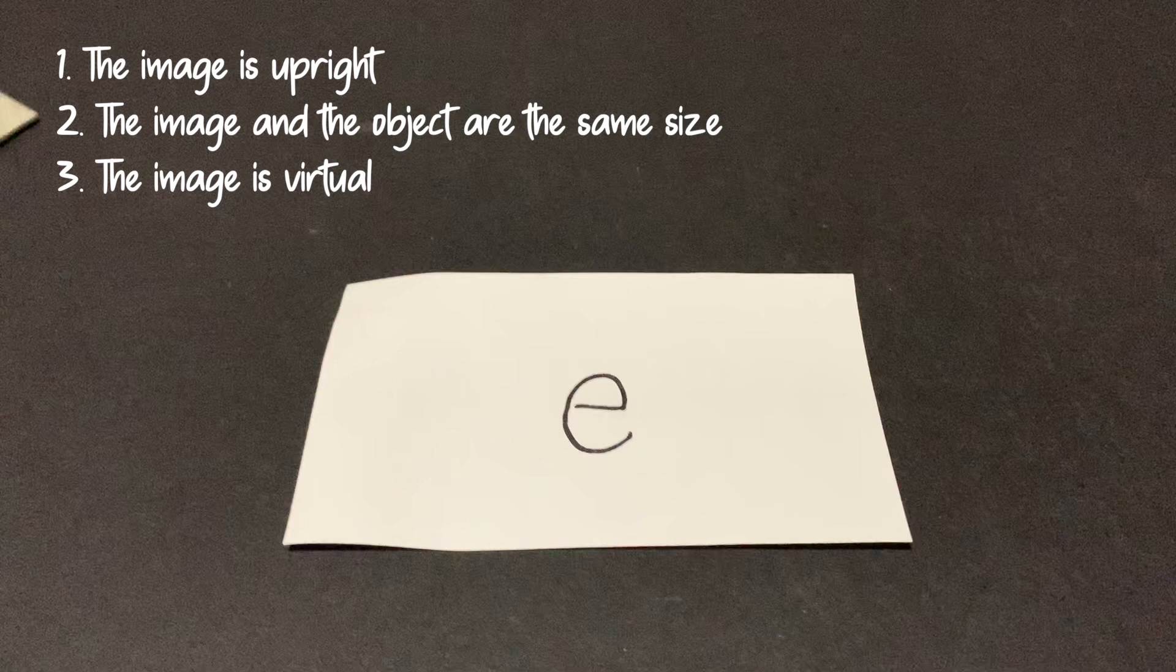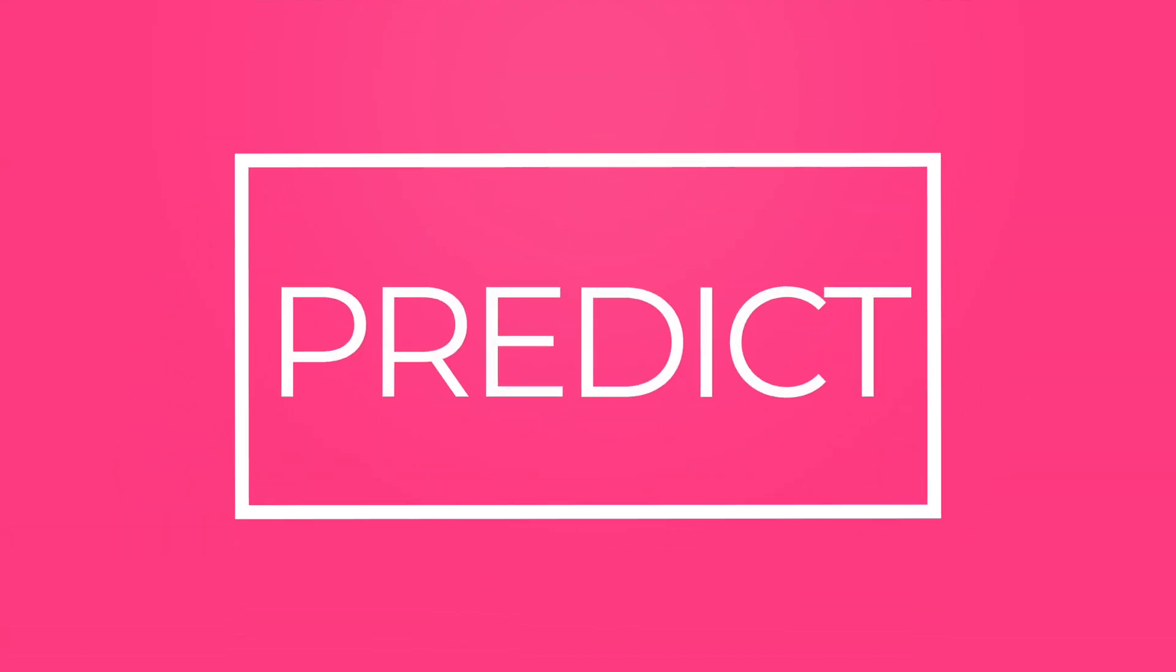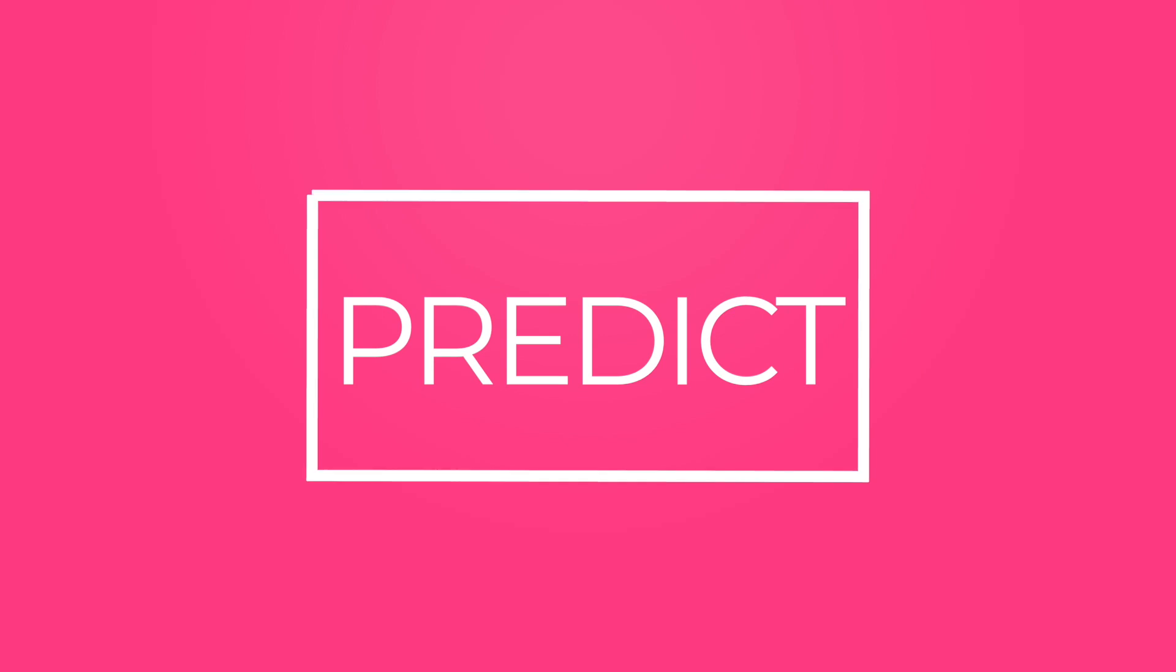The image is also virtual. This means that the image cannot be reflected onto a screen behind the mirror. Now I would like you to predict how would the image of the letter E look like in the mirror.